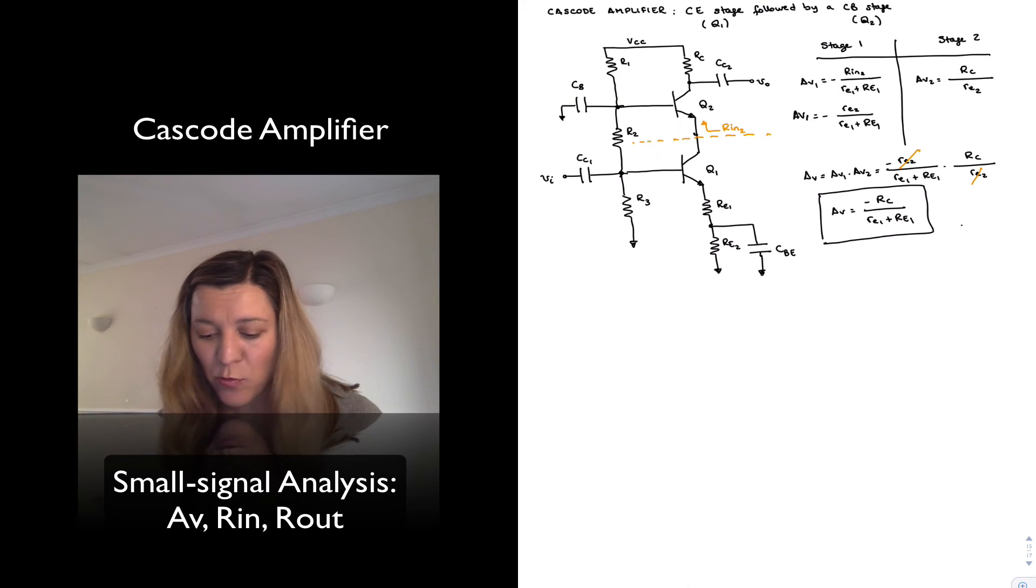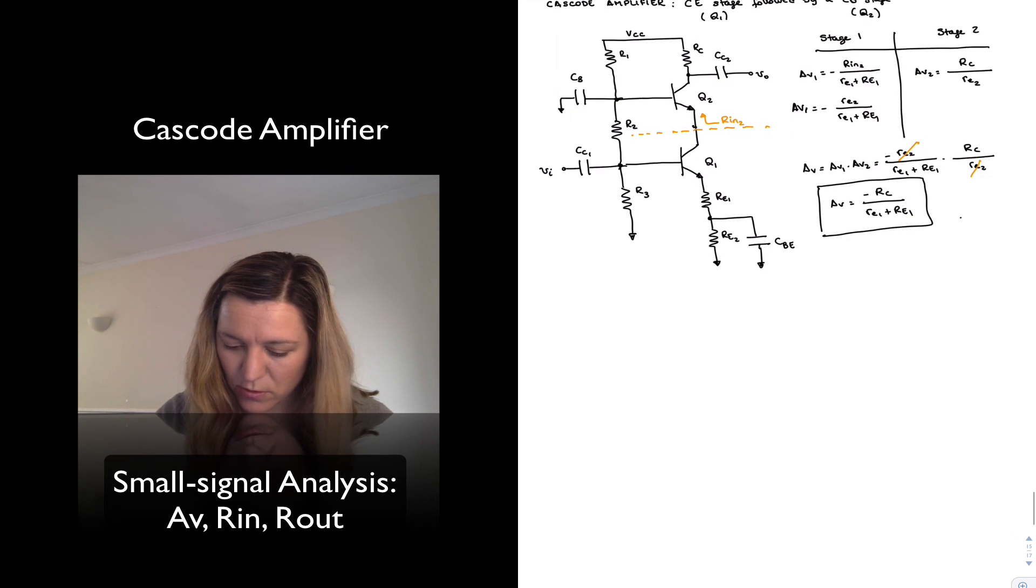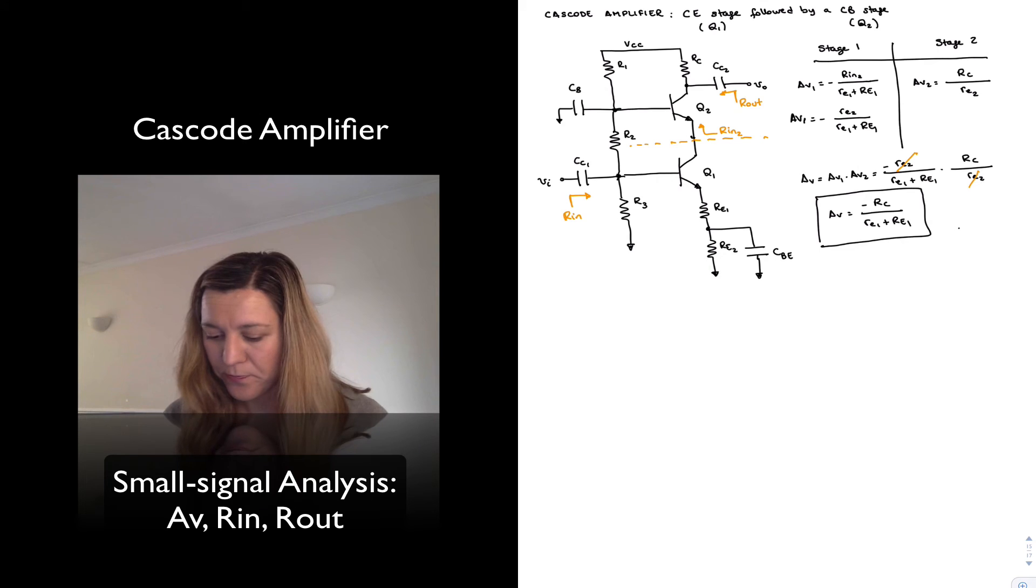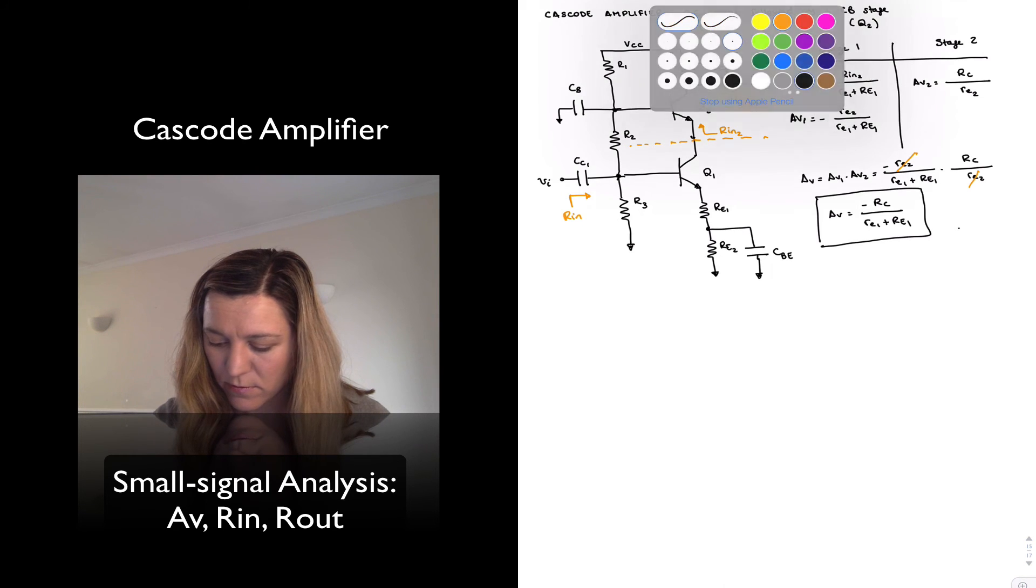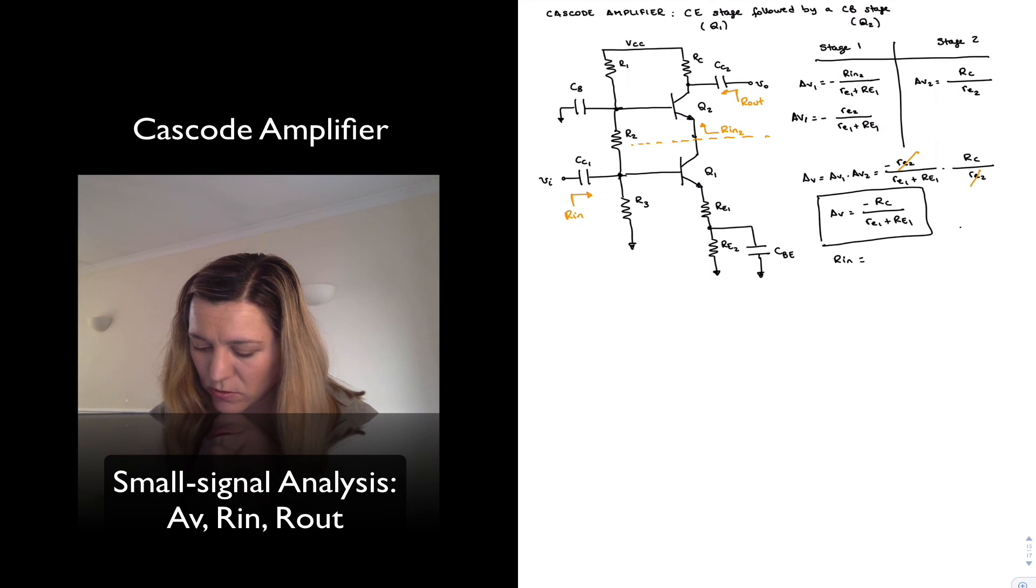Let's take a look at the input resistance and output resistance real quick. My input resistance will be the resistance looking into my base of the first transistor there, RIN. RIN will be equal to R3 in parallel with R2, and R2 is connected to an AC ground through the base resistor CB. So I'll have R2 in parallel with R3 in parallel with the resistance looking into the input of transistor Q1.